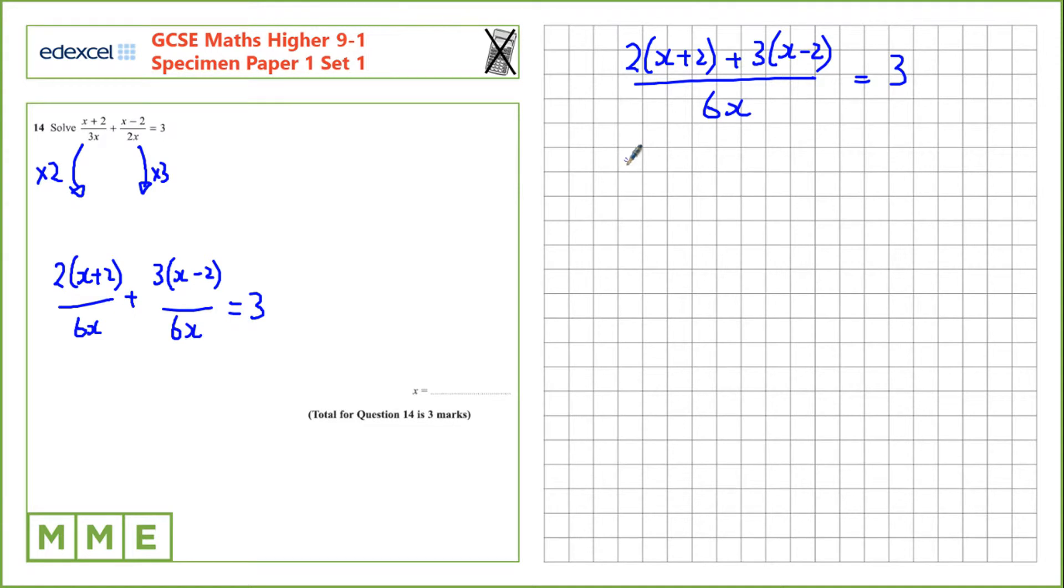Now let's expand and simplify. So, in this bracket here, we have 2 times x is 2x, 2 times 2 is 4, 3 times x is 3x, and 3 times negative 2 is negative 6. That's all over 6x still, and equal to 3.